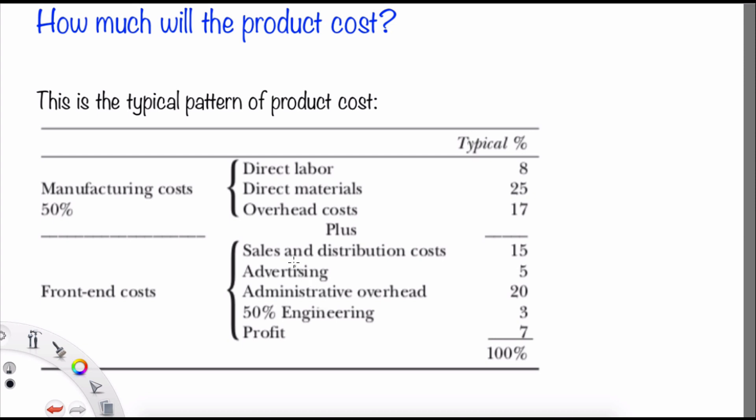Most of the product cost—manufacturing cost will be 50% and the front end cost will be 50%. And in the manufacturing cost,